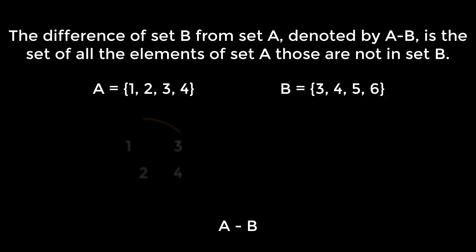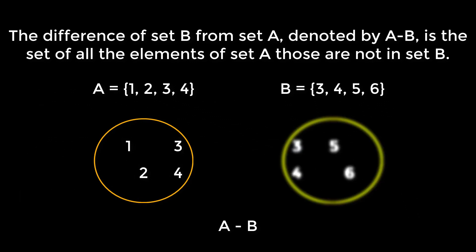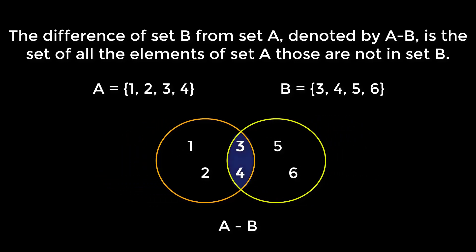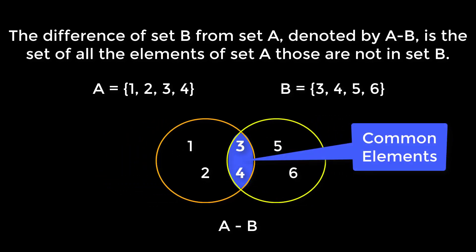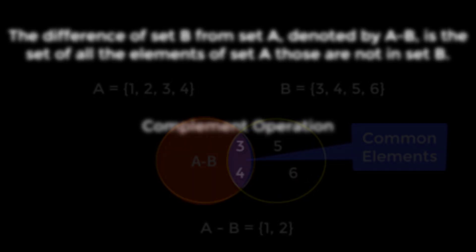Let's express A difference B in a Venn diagram. This is A and this is B. Here are the common elements, and this shaded region is A difference B. Alright, enough about the difference operation — let's focus on the complement operation.